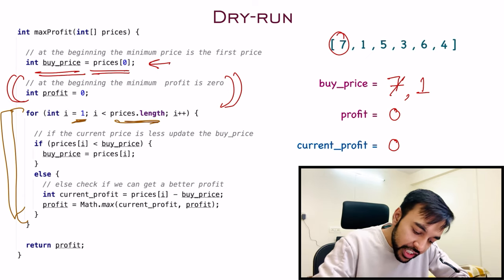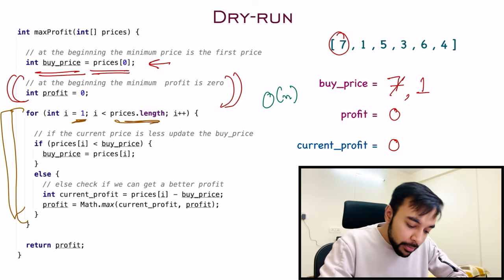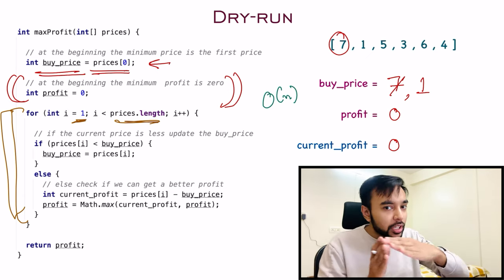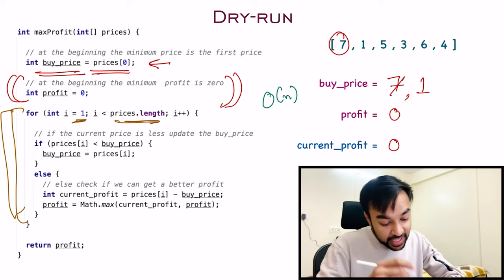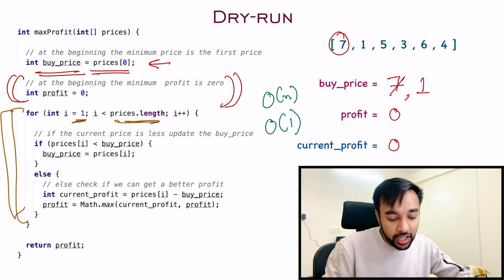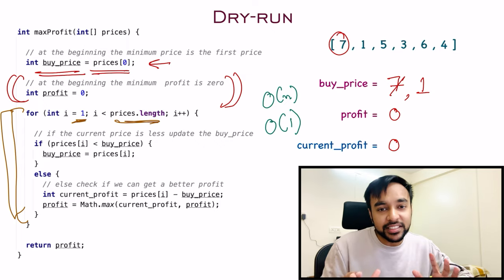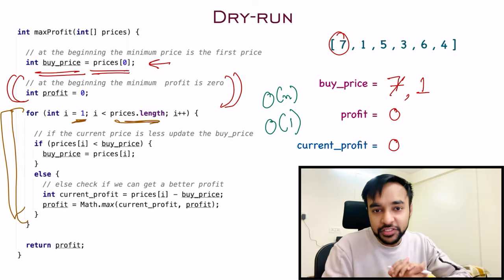The time complexity of this solution is O(n) because we traverse the array only once, and the space complexity is O(1) because we do not take any extra space to arrive at the solution.